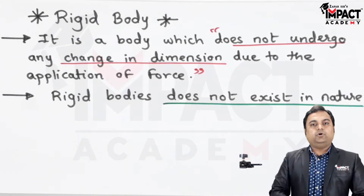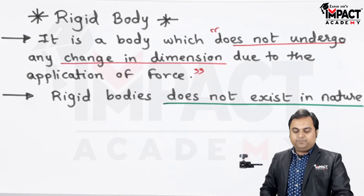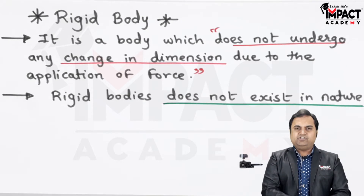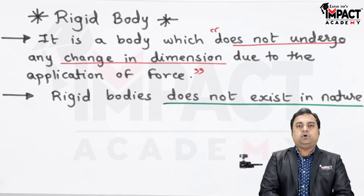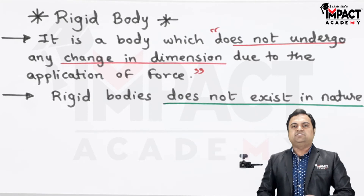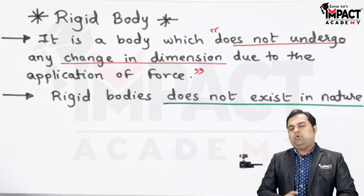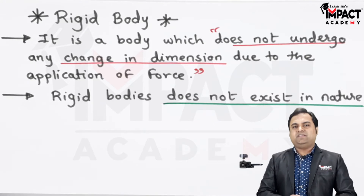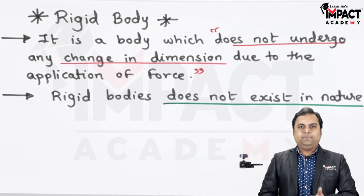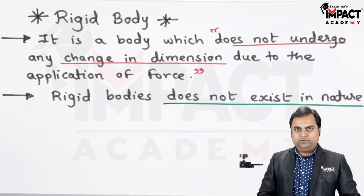Rigid bodies do not exist in nature — it is just a theoretical concept used for solving problems related to mechanics, in which whatever examples or elements are given, we are considering them as rigid bodies and then solving the problems.